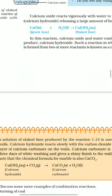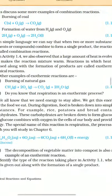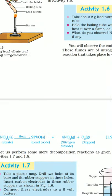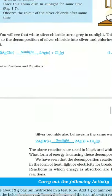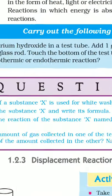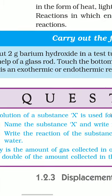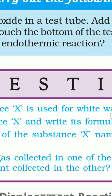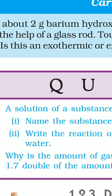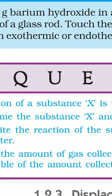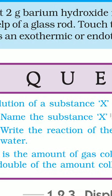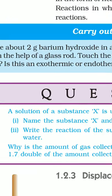A solution of the substance X is used for whitewashing. Name the substance X and write its formula. The substance X is calcium oxide, also called quicklime. Its formula is CaO. Write the reaction of the substance X with water. CaO solid form plus H2O liquid gives Ca(OH)2 aqueous.